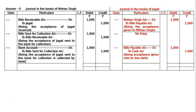The journal will now be totalled. Both Mohan Singh and Jagat's books are to be totalled. The totalling will be Rs.3000 in the case of Mohan Singh, and in the case of Jagat it is Rs.2000. You have to verify this 2000, and this is the final answer.